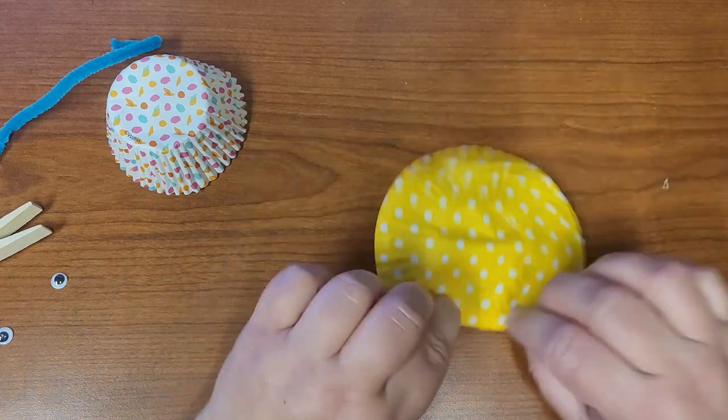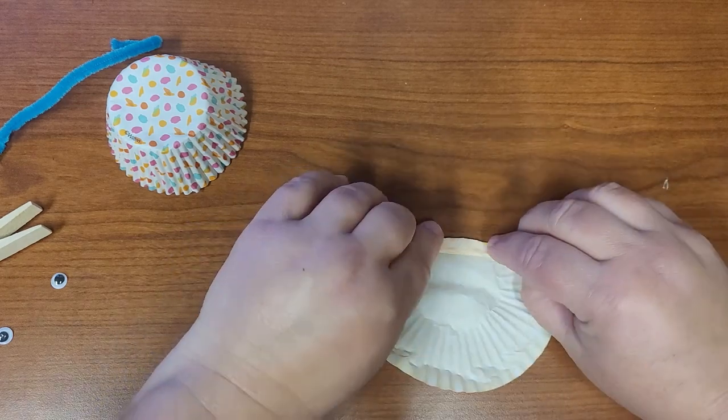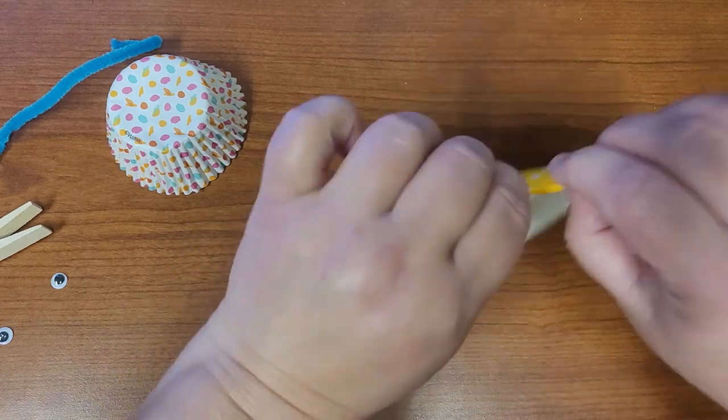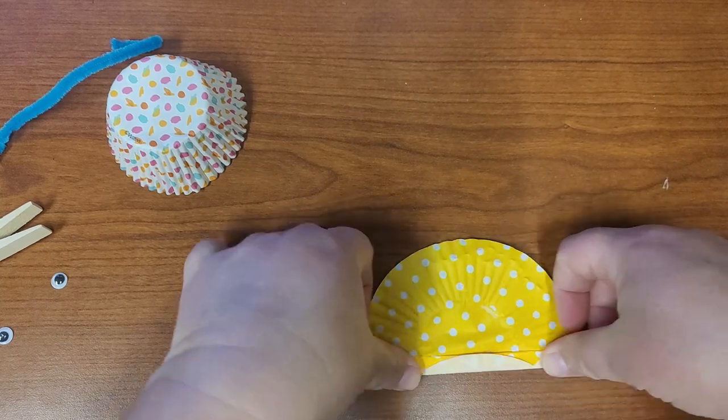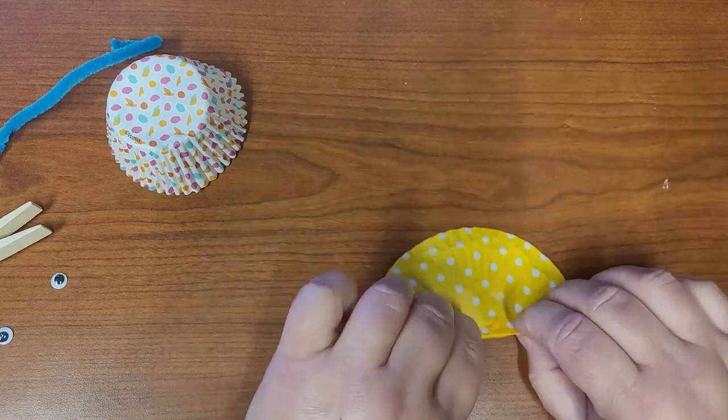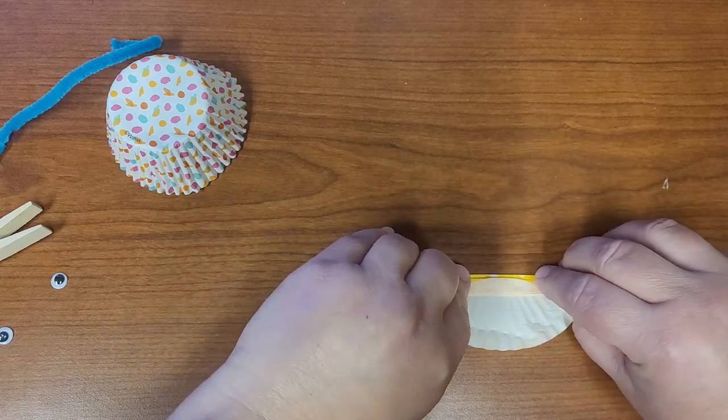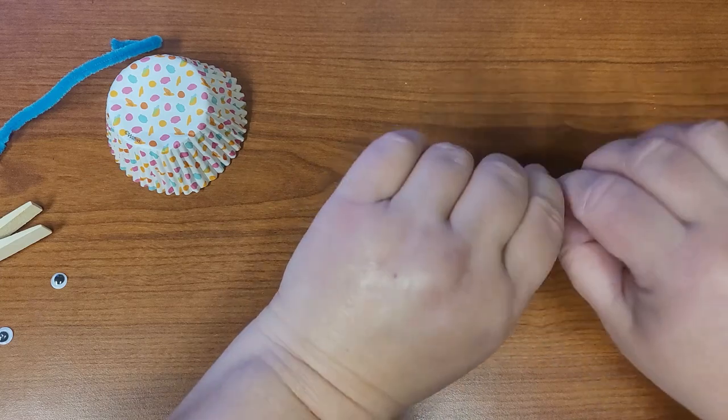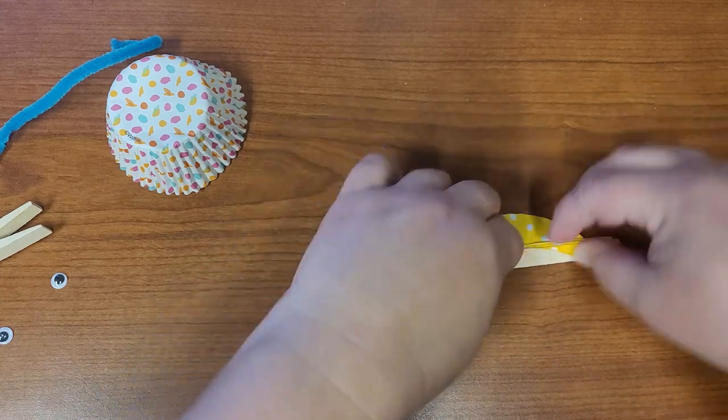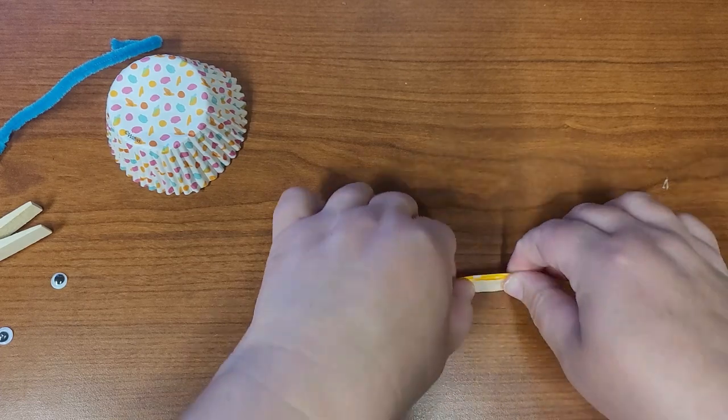Fold it back. You're just going to go back and forth like an accordion or a fan and these are going to make the butterfly's wings. So this just takes a little bit of time and patience to fold.